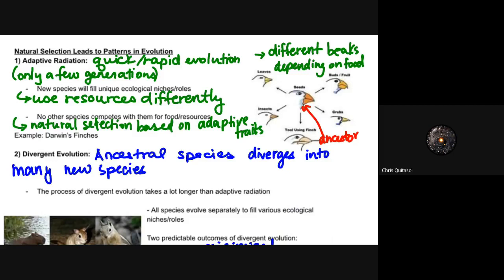The first pattern that we're going to look at is what's called adaptive radiation, that quick, rapid evolution within only a few generations, and it leads to a new species that will fill specific and unique ecological niche or role. They will use resources that were not utilized by any species previously and they will not have to compete with any other species for that food or resource. That natural selection is based on an adaptive trait.